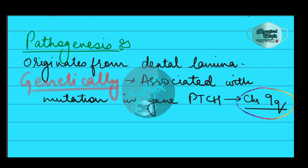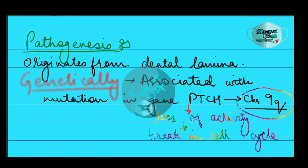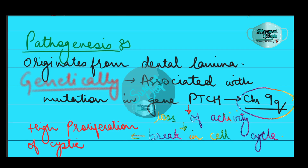The PTCH gene is found on chromosome 9q and is part of the hedgehog signaling pathway. PTCH is a tumor suppressor gene, and loss of PTCH activity leads to a break in the cell cycle. A third of OKCs show mutation in PTCH, resulting in the cyst epithelium undergoing highly proliferative activity, which leads to growth of the cyst wall.